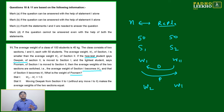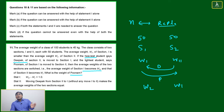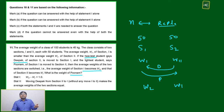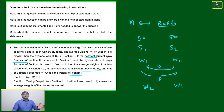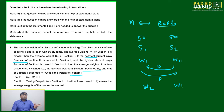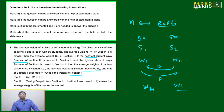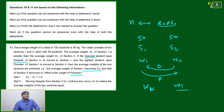Full scenario: 100 students divided into two sections of 50 each. Average of Section 1 is w1, average of Section 2 is w2. Deepak (heaviest) shifts from Section 2 to Section 1; Poonam (lightest) shifts from Section 1 to Section 2. After shifting, averages of the two groups interchange — Section 1 becomes w2, Section 2 becomes w1.